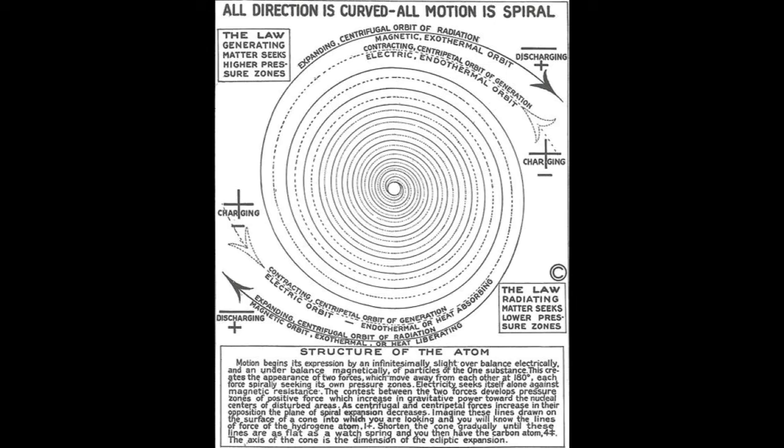This is a reading of Chapter 4, The Source of Power, a chapter from the book The Secret of Light, written by Walter Russell, read by D.J. Morgan.